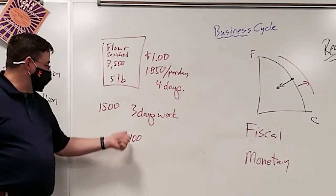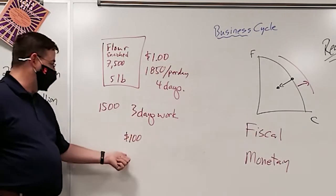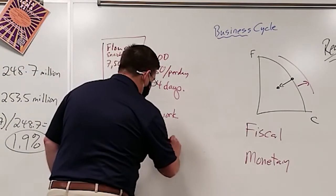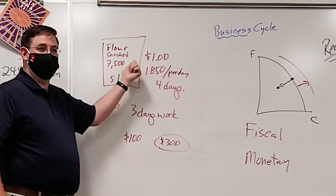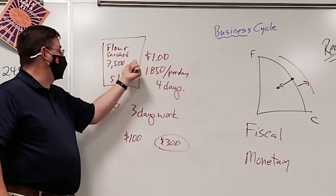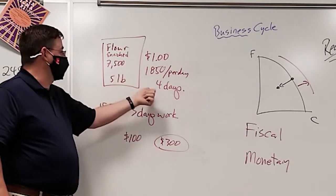So then, in three days time, the average American could earn $300. And with that $300, they could buy 300 bags of flour, which would be enough food to feed a person for four years.